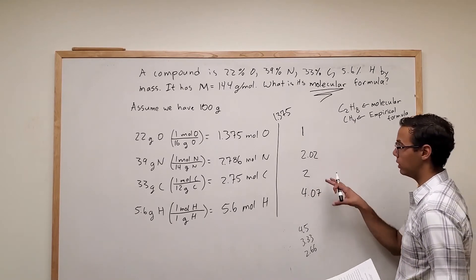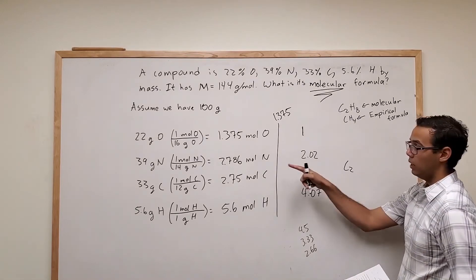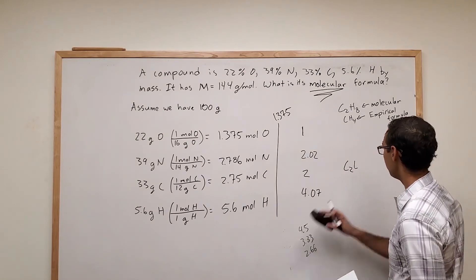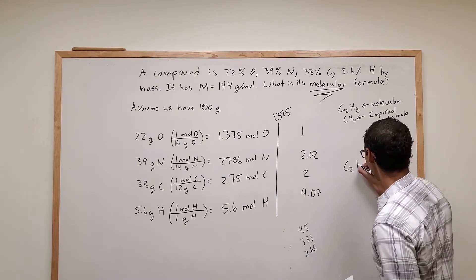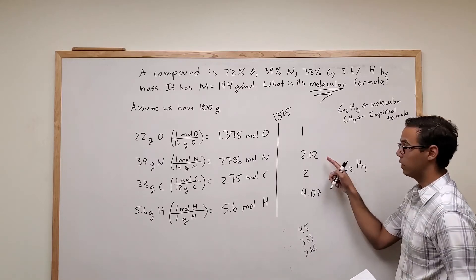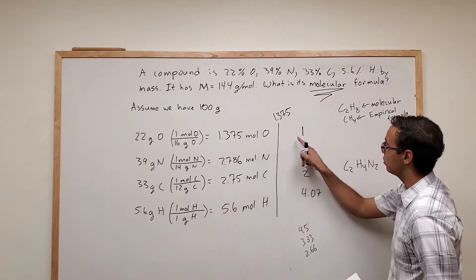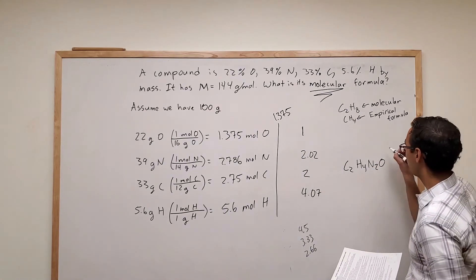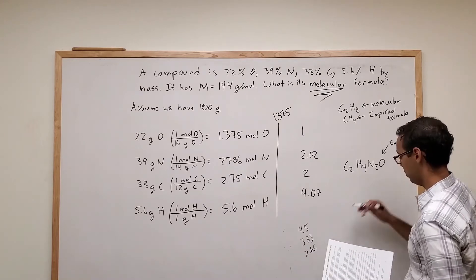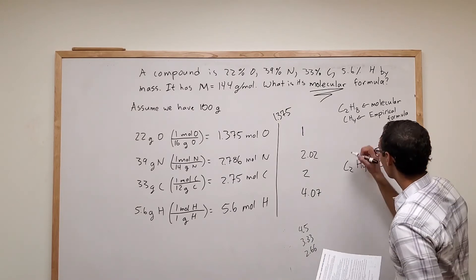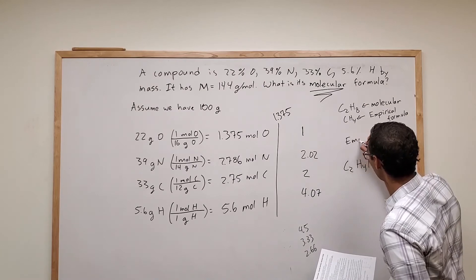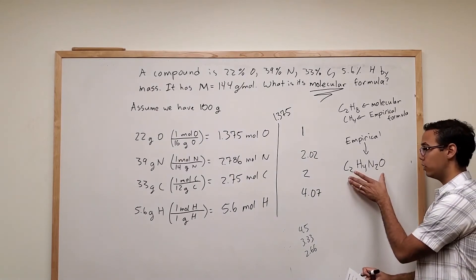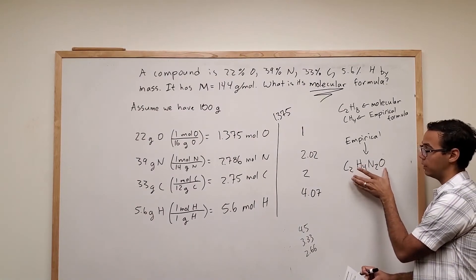So if we wrote this one out, we'd see that we have two carbons. So we'd have C2. We'll do hydrogens first. So C2H4. We have two nitrogens. And one oxygen. All right, so this here is our empirical formula, because it's the lowest integers possible to maintain the ratio between elements.